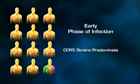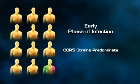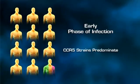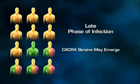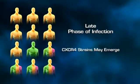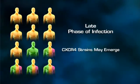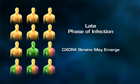In the early phase of infection, the CCR5-using virus predominates in most patients. In the late phase of infection, HIV strains capable of using CXCR4 often emerge.